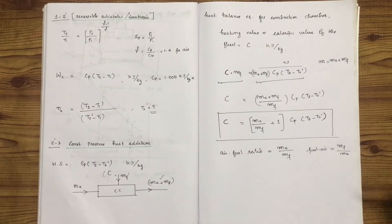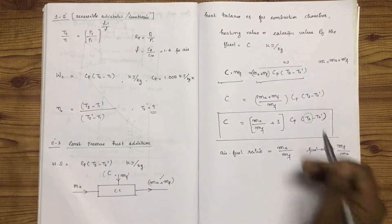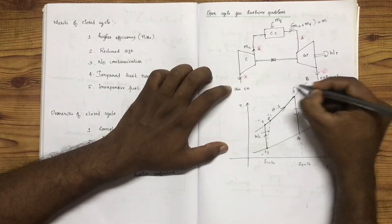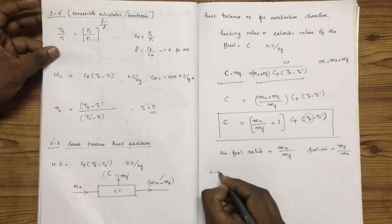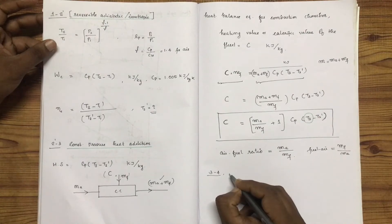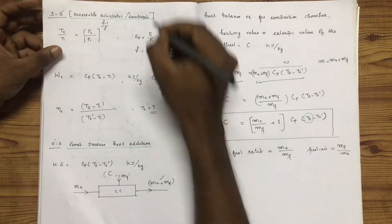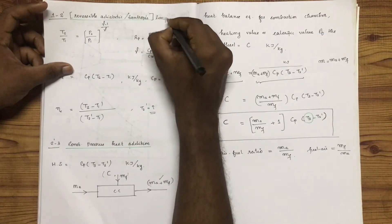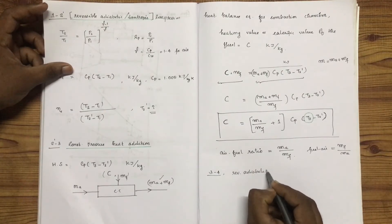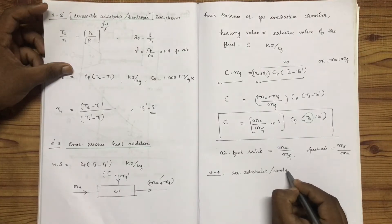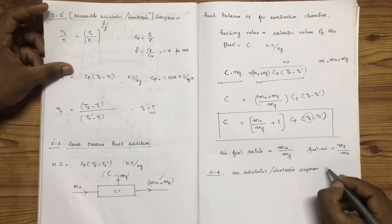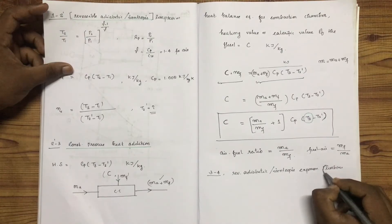We can find the missing temperature T3 from the heat balance. Moving on, we find the 3-to-4 process parameters. The process is isentropic expansion — reversible adiabatic expansion in the turbine. In the compressor it was reversible adiabatic compression; here it is expansion in the turbine using isentropic expansion.